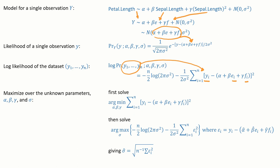This maximization is very simple calculus. The answer is sigma hat is square root of one on n, sum of ei squared.